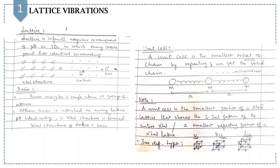Here you can see lattice points along with bases. Bases may be a single atom or group of atoms. And when we attach bases to every lattice point identically, then we get a crystal structure. Now we can easily remember the definition of crystal structure, which is nothing but: crystal structure equals lattice plus bases.